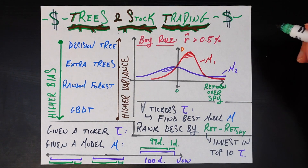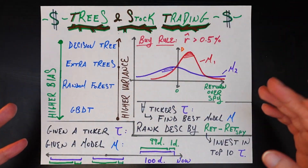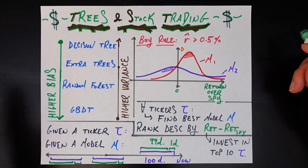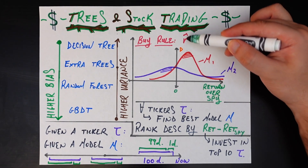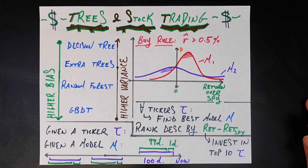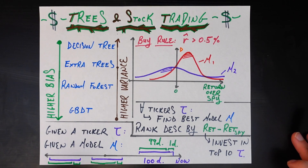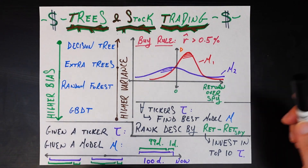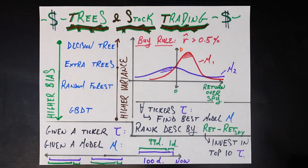What we can then do is draw distributions of the excess return of using each method — decision tree, extra trees, linear regression — to buy stocks, over just buying and selling the S&P 500 instead. Each point in a distribution represents one ticker in the S&P 500. For example, if a red distribution from decision trees and a purple distribution from GBDT overlap a lot, it's not conclusive. We can compare their means and standard deviations. This method is more robust than training once, because in stock trading you can't trust anything from a single day — we get a full distribution of how likely each model is to produce a positive excess return.